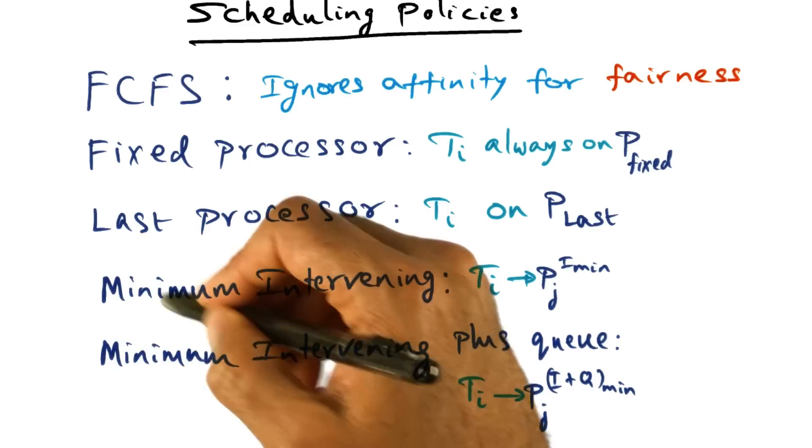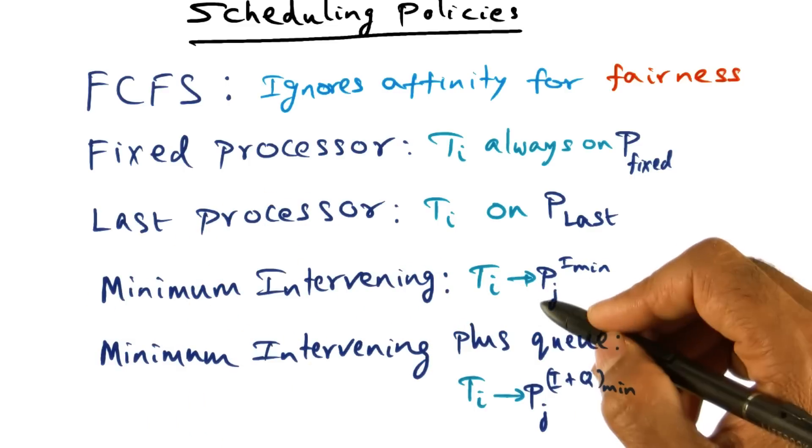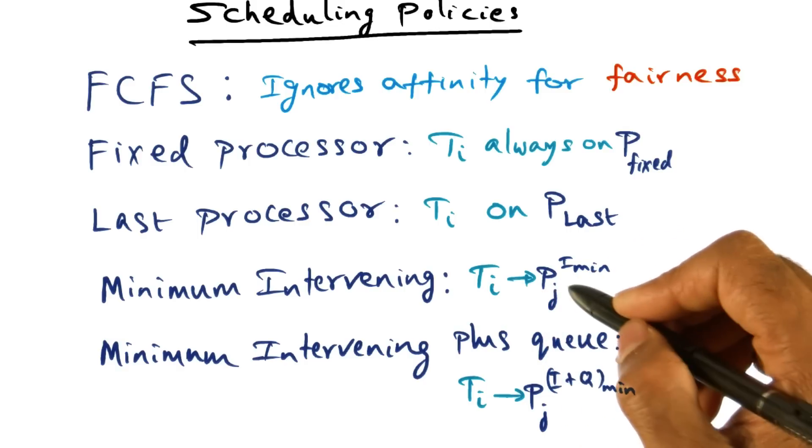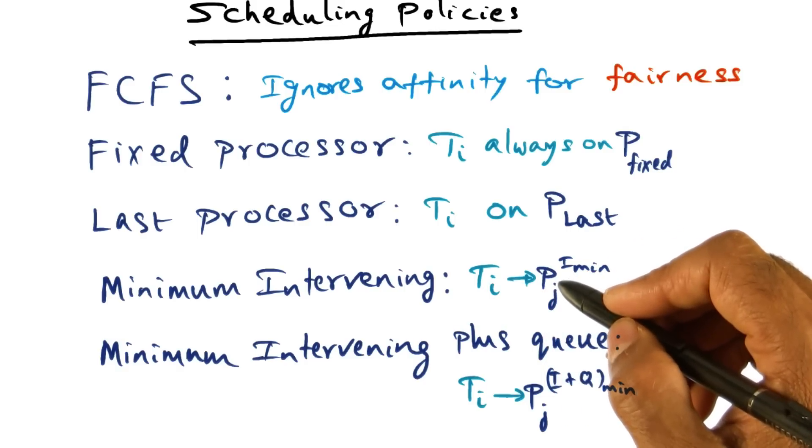And as I mentioned, these two scheduling policies will really not be having the information for a thread with respect to all the processes in the system, because in a large scale processor it may be infeasible to do that.